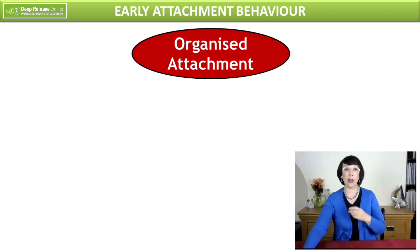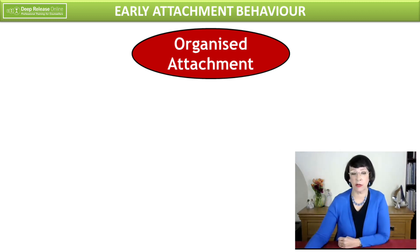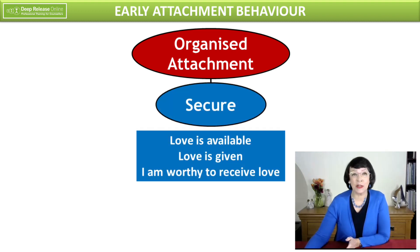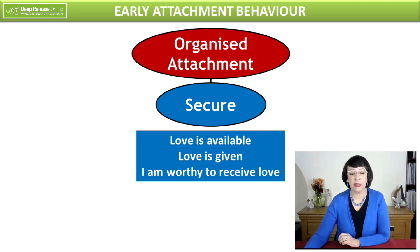I want to very quickly cover the basics of attachment theory. There are three types of organized attachment. The first one is secure — what we all long for. My little aide-mémoire for this is: love is available, love is given, and I am worthy to receive it.